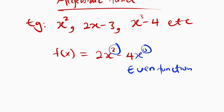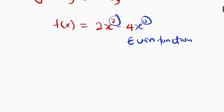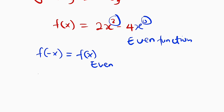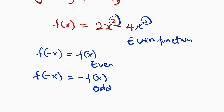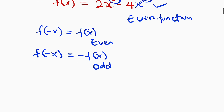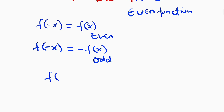The second way to identify whether it is even or not is by substituting x with negative x. In general, if f of negative x equals f of x, then we say that function is an even function. But if f of negative x turns out to be negative f of x, then we say the function is odd. So let us test for this one. f of negative x will be equal to 2 multiplied by negative x to the power of 2 minus 4.